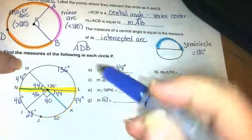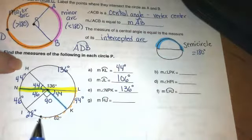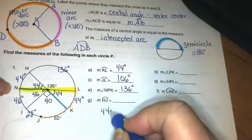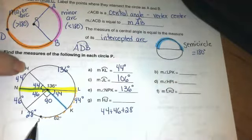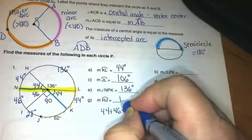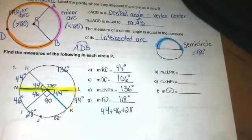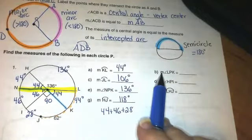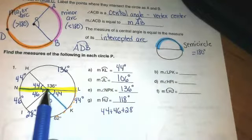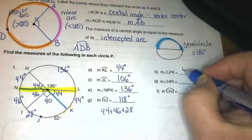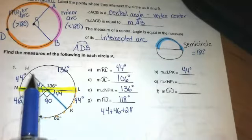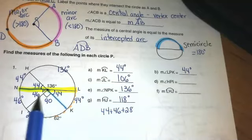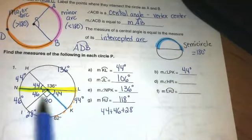Arc HJ, from H to J. Now notice they just use the two letters HJ, so they don't want me to go the long way around, they want the minor arc, the short way from H to J. So that's just going to be me adding up 44 plus 46 plus 28 to get from H to J, so 118 degrees.